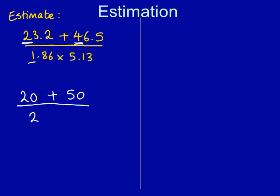We do exactly the same on the bottom. The first number on the bottom is 1.86. The first significant figure is a 1. The next number is 8, so we round the 1 up to 2. Now we do it for our last number, 5.13. The first significant figure is 5. The next number is a 1, so we don't round it up. We keep it the same. So 5.13 becomes 5.